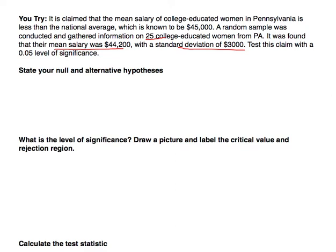In this video I'd like to go over an example for a hypothesis test for a mean — we are dealing with one sample mean. It is claimed that the mean salary of college-educated women in Pennsylvania is less than the national average, which is known to be $45,000. After doing a simple random sample of 25 college-educated women, we found that their mean salary was $44,200 with a standard deviation of $3,000.